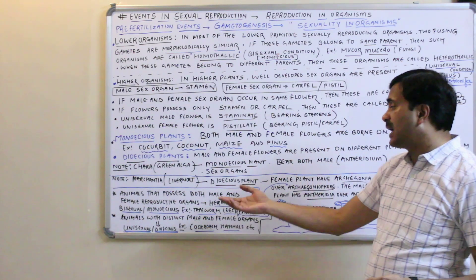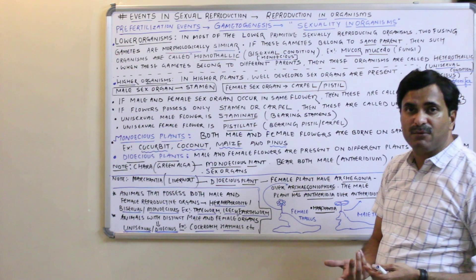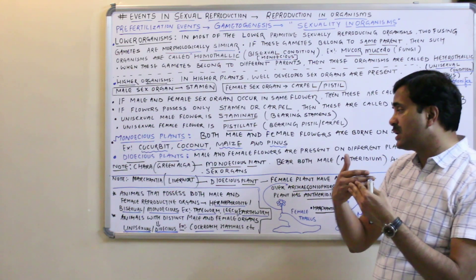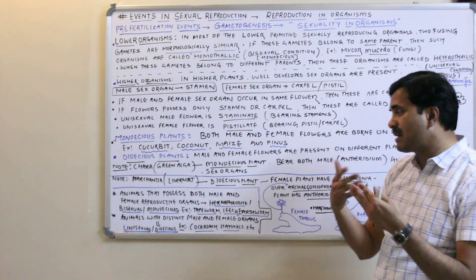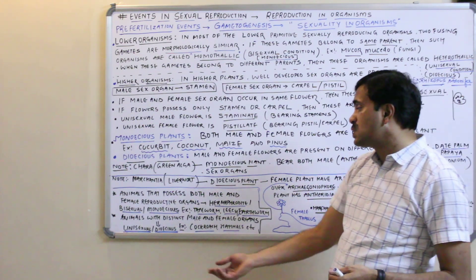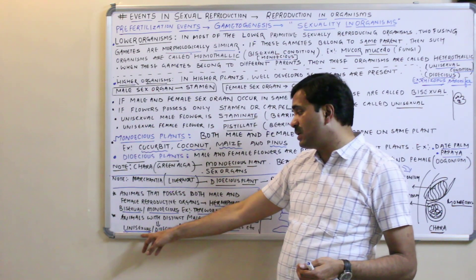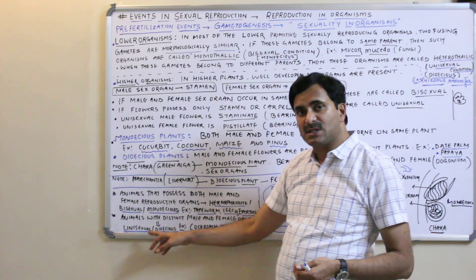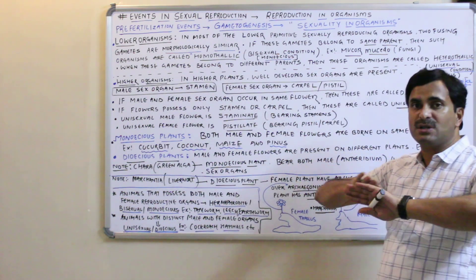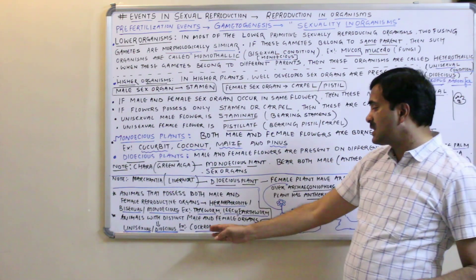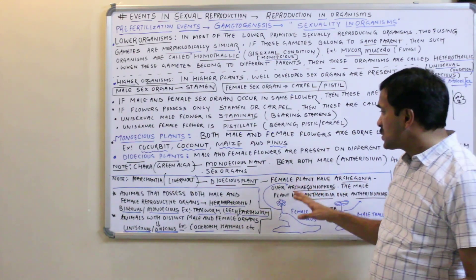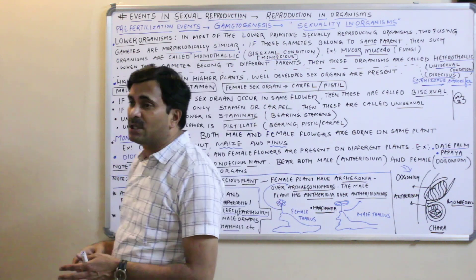There are also animals including human beings where male and female reproductive organs are present separately — males have male organs and females have female organs. This condition, where sexual dimorphism is found, is called unisexual or dioecious. Examples include cockroach and all mammals.